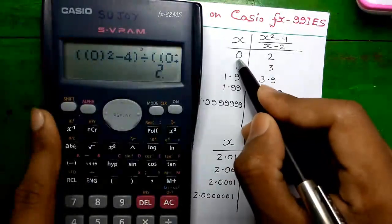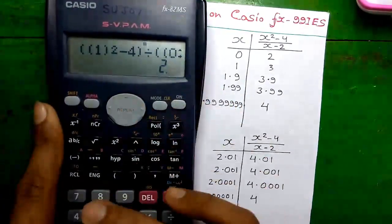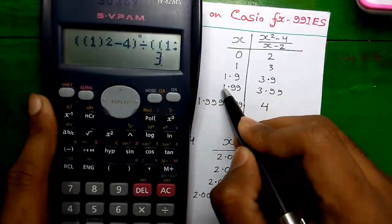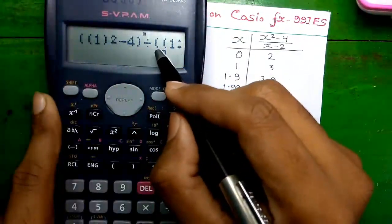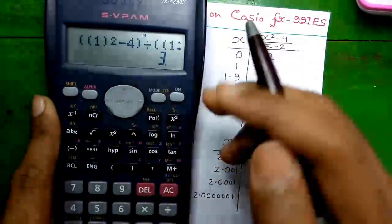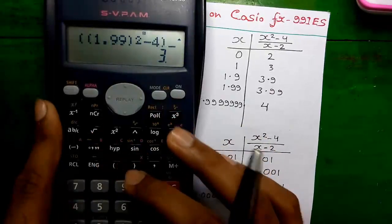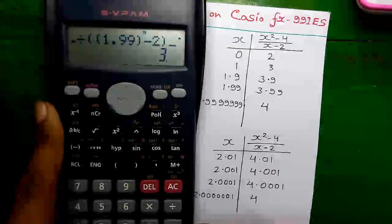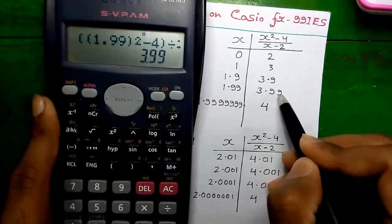Now go very close to 2. Let's take the value 1.99. You have to reform the expression, because on this calculator, if the magnitude of the value changes, you have to reform it. For x equals to 1.99, the value of the expression is 3.99, which is very close. So now we have come very close to 2.